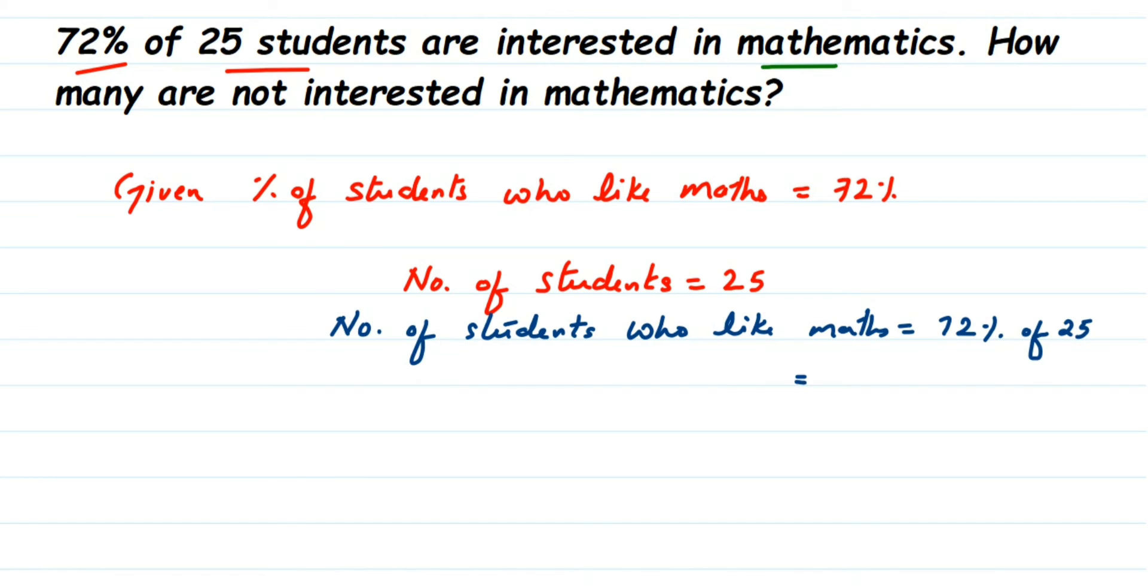So remove the percentage sign and divide that by 100. So 72 divided by 100. Percentage whenever is given, it is per hundred. So whatever number you have, divide that by 100 and remove the percentage sign. Of means multiplication, and then you have 25.